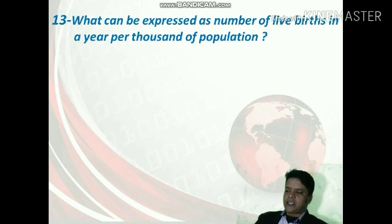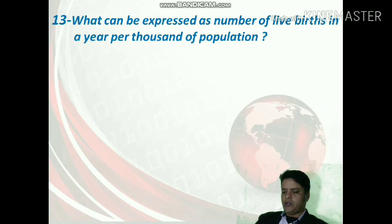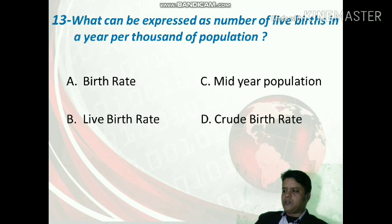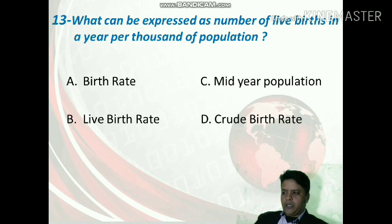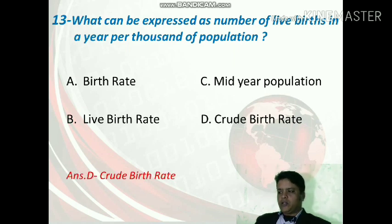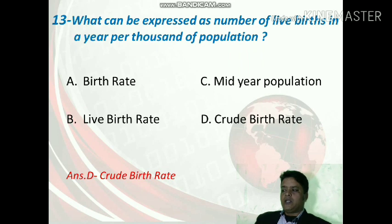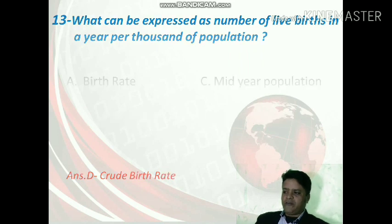What can be expressed as the number of live births in a year per thousand of population? The options are birth rate, mid-year population, live birth rate, or crude birth rate. The correct option is D — crude birth rate — it represents how many live births occurred per thousand people in one year.